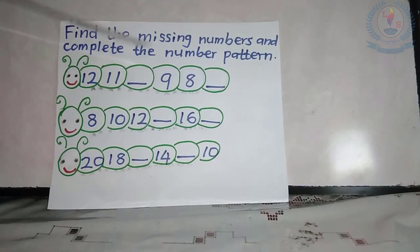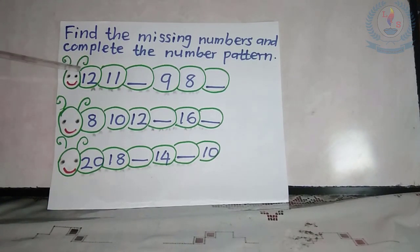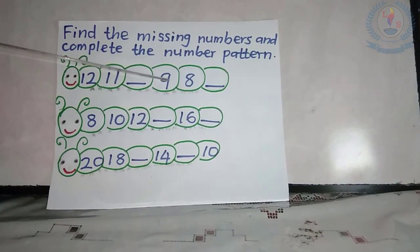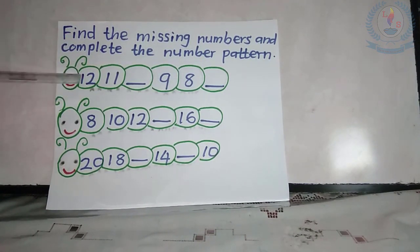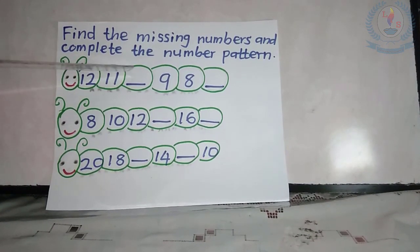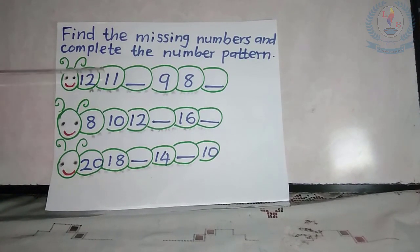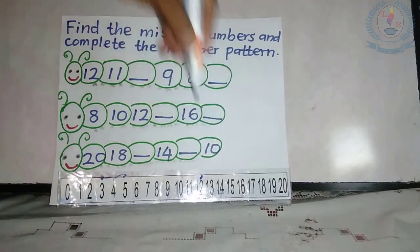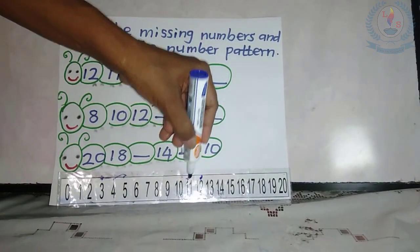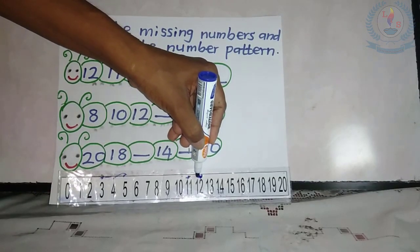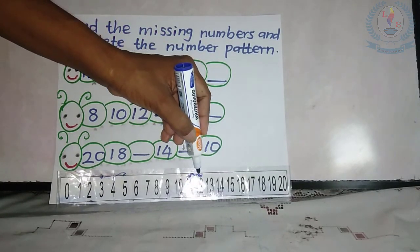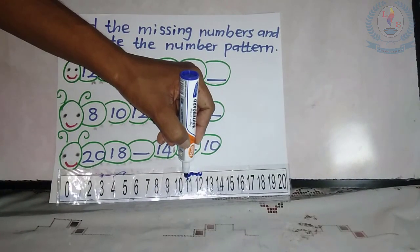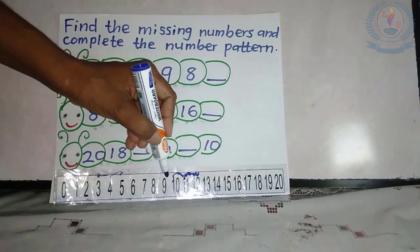Find the missing numbers and complete the number pattern. What is the first number? Yes, 12, 11. The third number is missing. 9, next 8. The last number is missing. Did you identify the number pattern? Yes, count back. We will find the answer. The 1st number is 12. The 2nd number is 11. From the 1st to 2nd number, we can draw the arrow. We count back in 1's. So, 11 to 10. We count back in 1's. What comes next? Yes, 10.